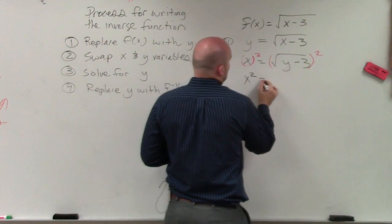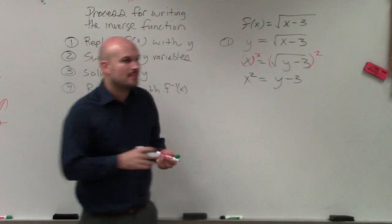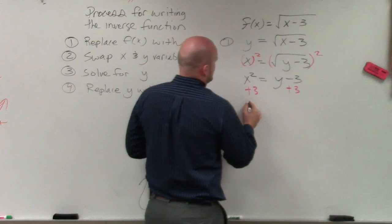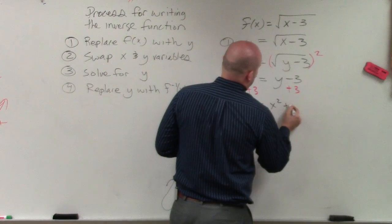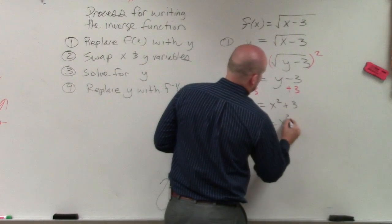So I have x squared equals y minus 3. Now to solve for y, add 3. So y equals x squared plus 3, or f inverse of x equals x squared plus 3.